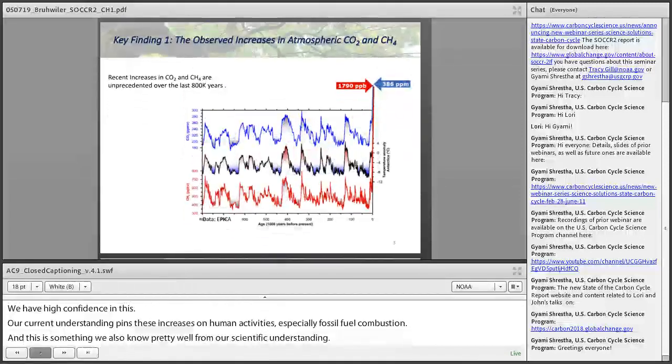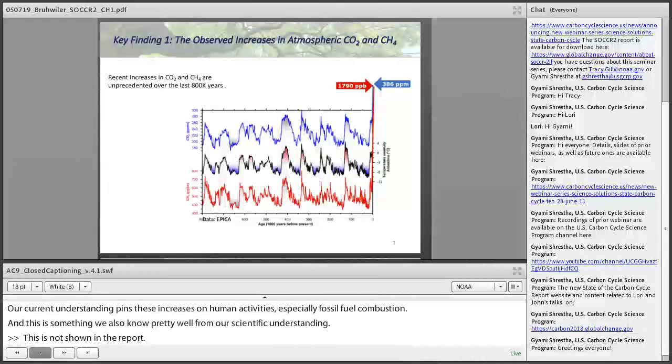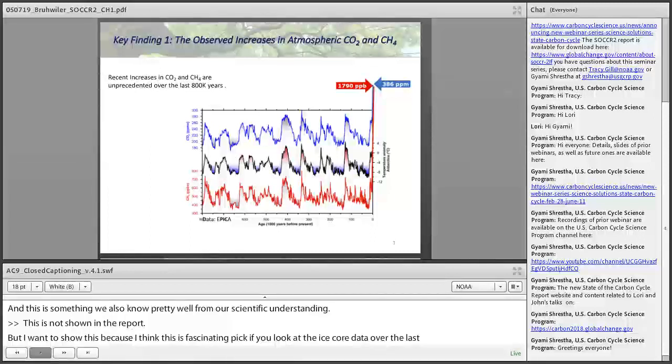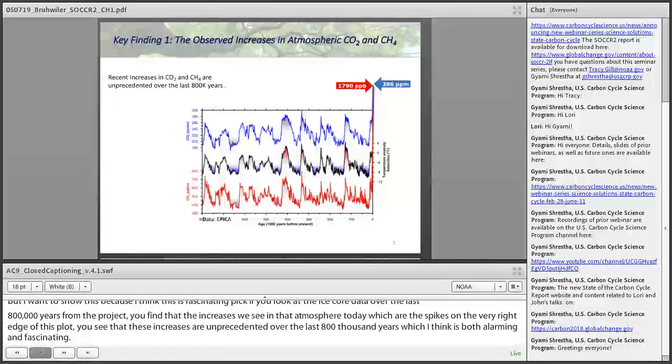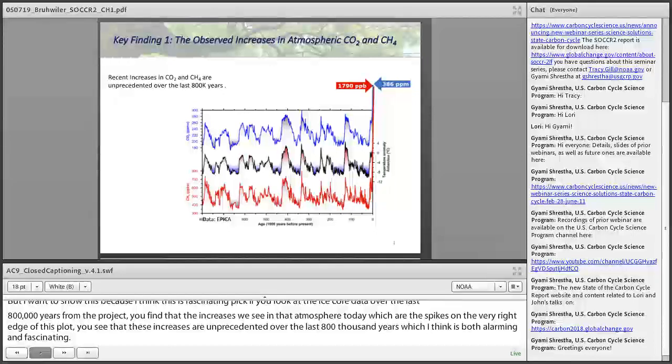This is not shown in the report, but I wanted to show this because I think it's fascinating. If you look at the ice core data over the last 800,000 years from the EPICA project, you find that the increases we see in the atmosphere today are unprecedented over the last 800,000 years, which is both alarming and fascinating. You can also see how methane and CO2 have varied over time in lockstep with temperatures. Clearly there is some relationship with CH4 and CO2 forcing the climate, although we don't understand all the feedbacks and details.